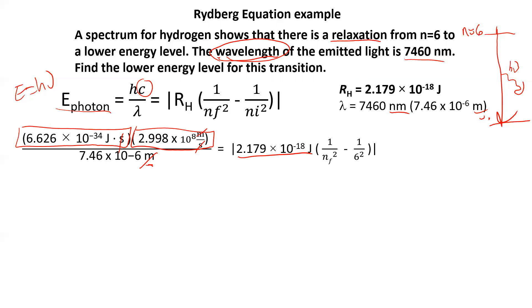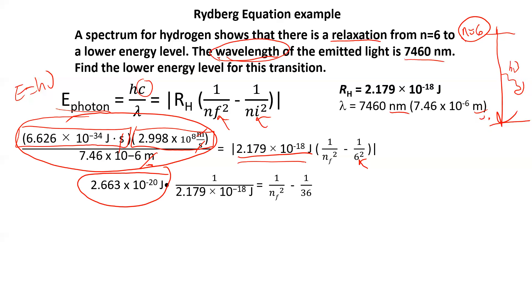And I know that my initial state is n equals 6. So my initial state is 6. And I'm looking for where does it land, n_f. So I figure out that this quotient right here, when I do the math, is this number. I divide both sides by Rydberg's constant, and I set it equal to the difference of these two quotients.